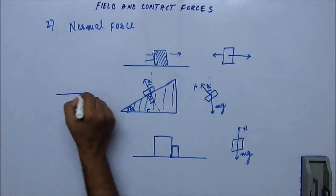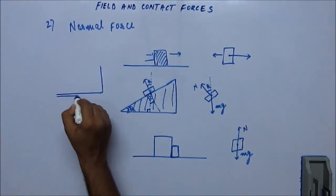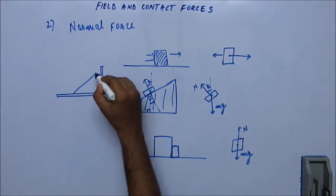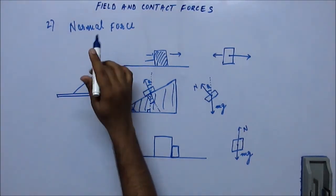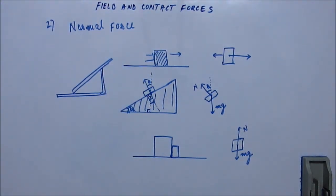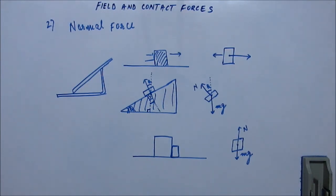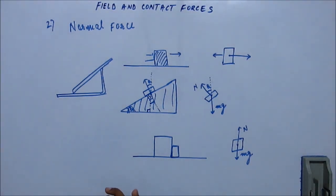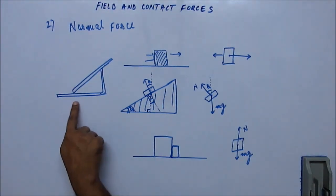Now let's consider a floor, a wall, and a ladder or stick kept leaning against the wall. Let's analyze the forces acting on that stick — focusing on normal reaction and setting aside mg for now. There are two contacts, so there are chances of two normal reactions, one at each contact. Normal in physics means perpendicular, and the normal reaction always acts perpendicular to the surface at each contact point.